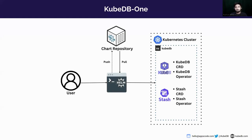Let's talk about KUBEDB one chart. If you are already a KUBEDB user, you know that in earlier versions of KUBEDB you had to use one Helm chart for installing KUBEDB and another separate Helm chart for installing Stash onto your cluster. But now you can use the KUBEDB one chart to install KUBEDB and Stash all together onto your cloud Kubernetes cluster using a simple Helm command with the Helm CLI.